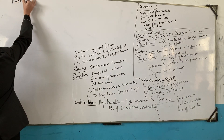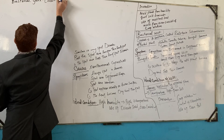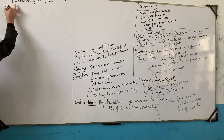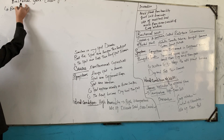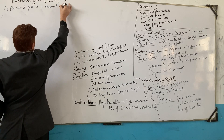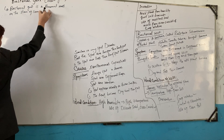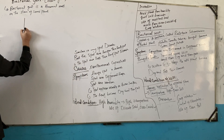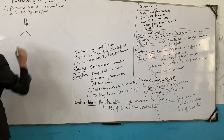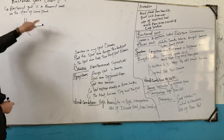Bacterial gall, also called Crown Gall. Bacterial gall is an abnormal mass that grows on the plant. This condition is known as bacterial gall — a type of abnormal growth.